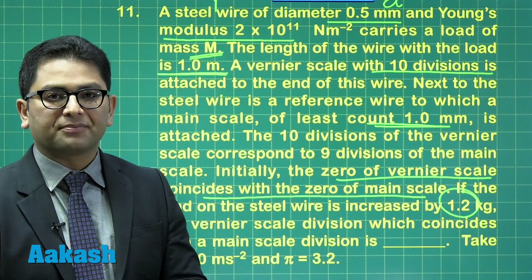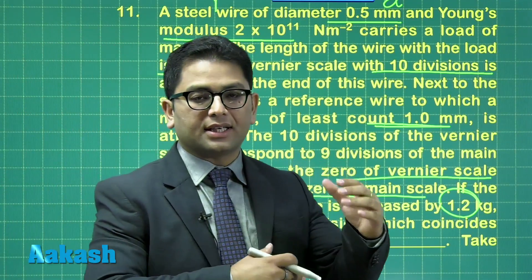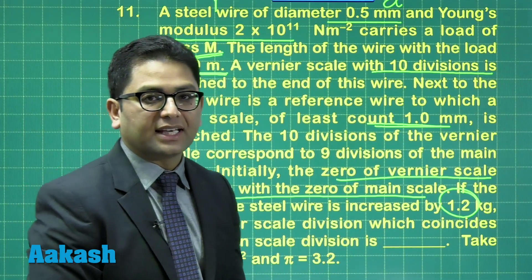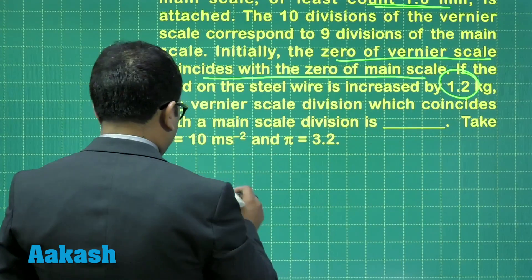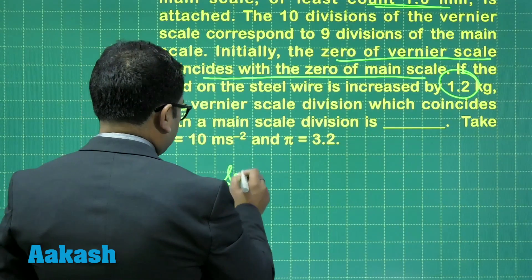Effectively, the idea is when additional load of 1.2 kg has been added, we'll try to find the elongation and we'll see how that elongation is measured by the vernier caliper. So the question is effectively very straightforward, and that question now comes out to be this.